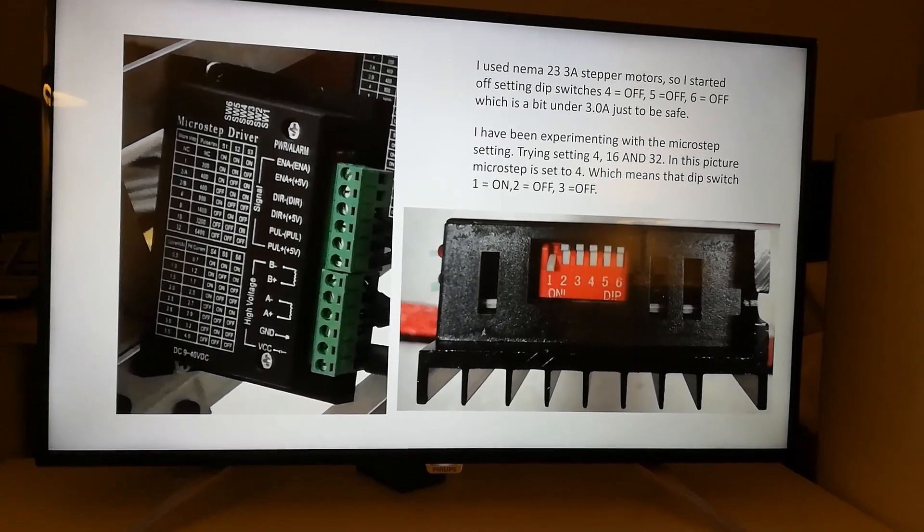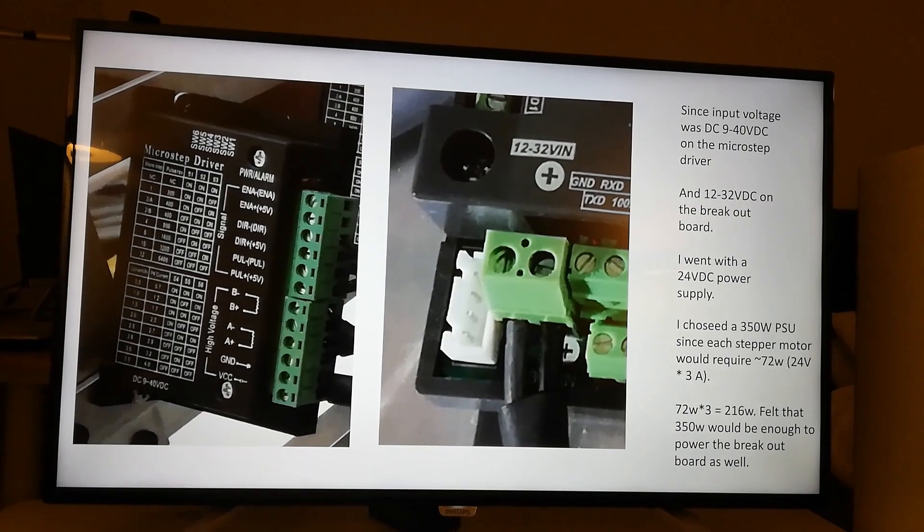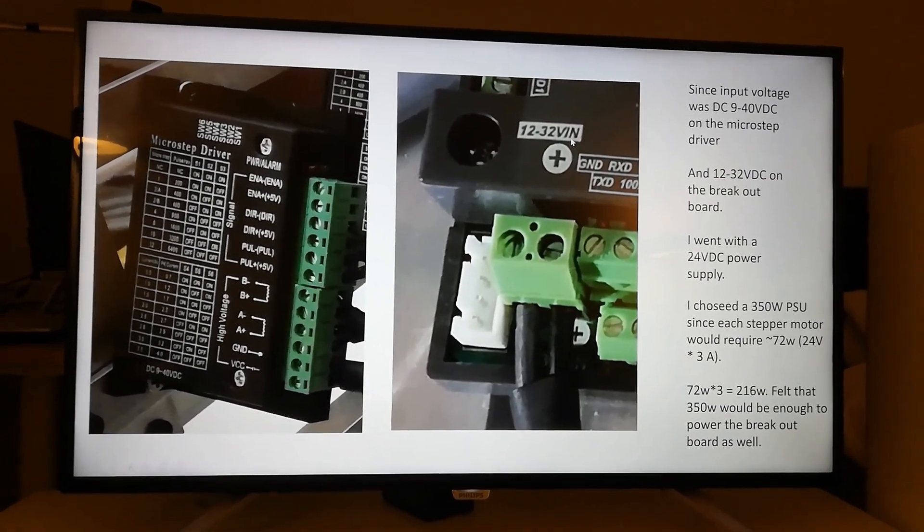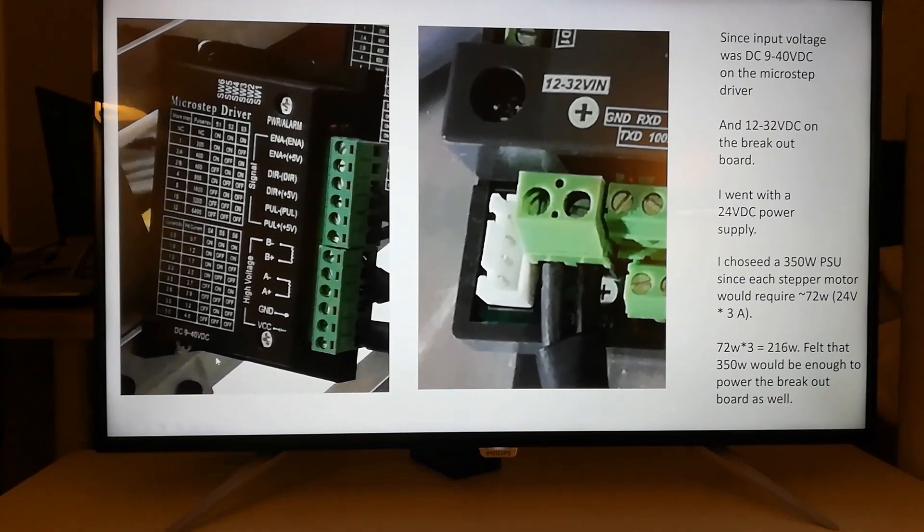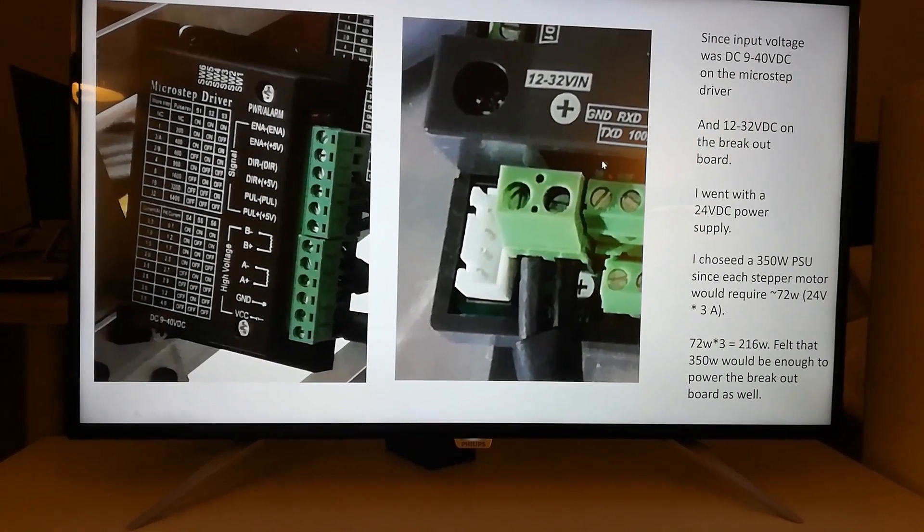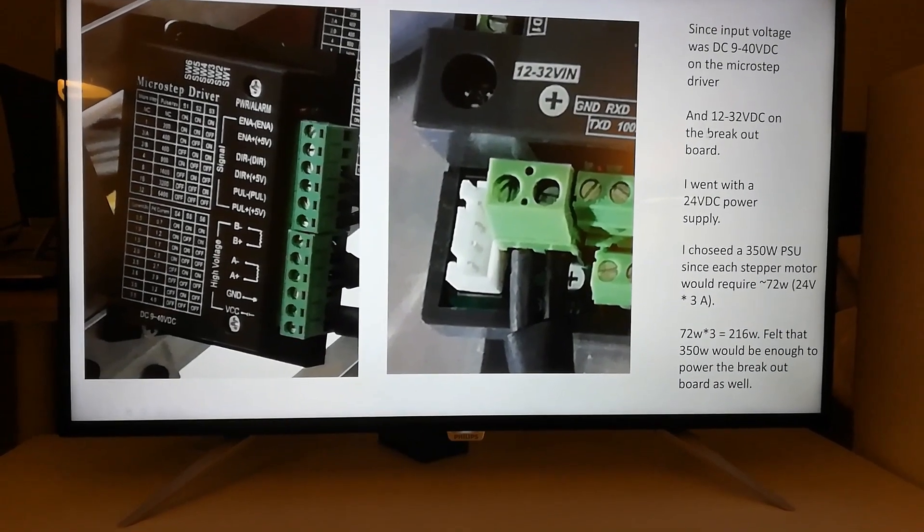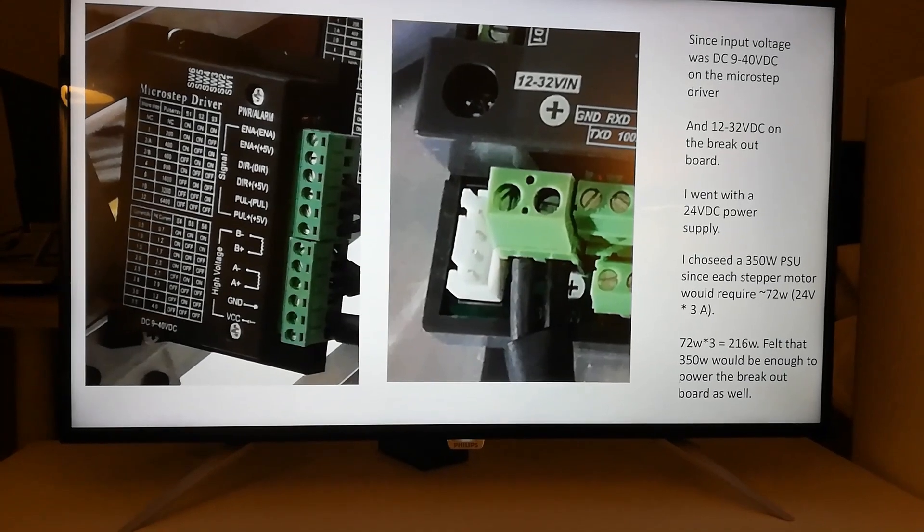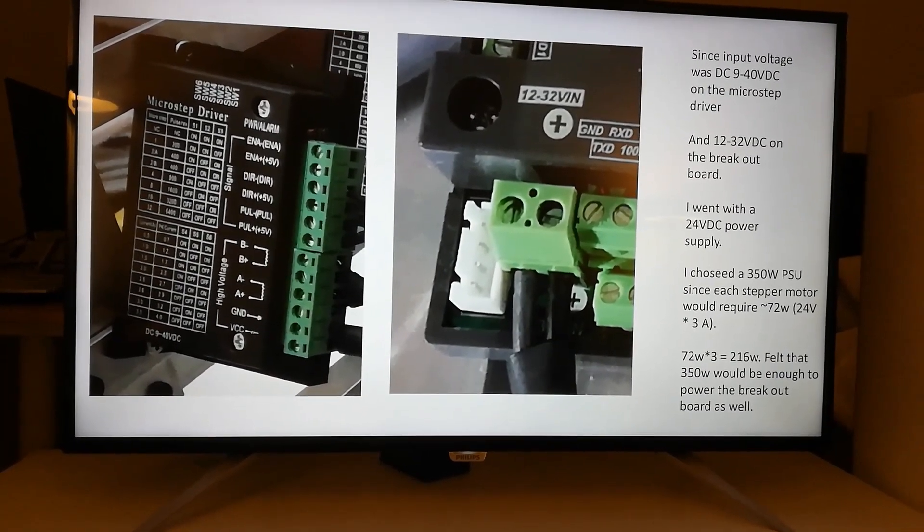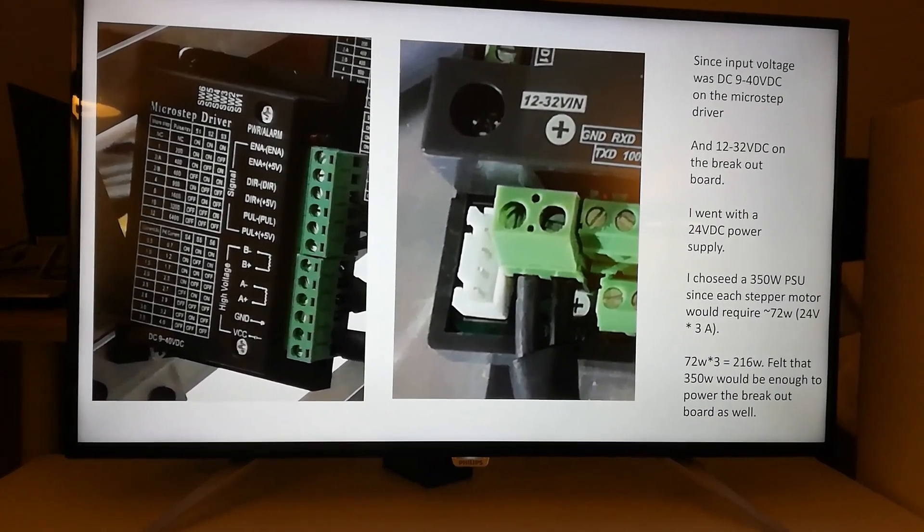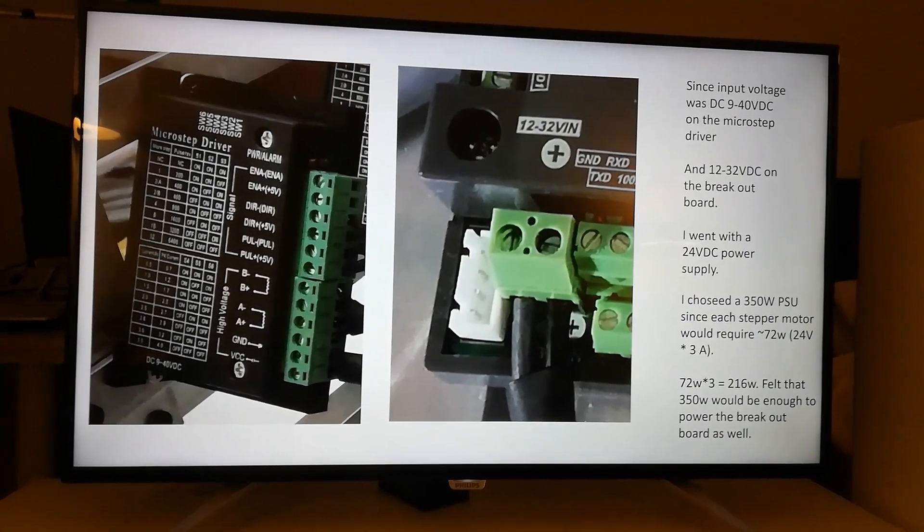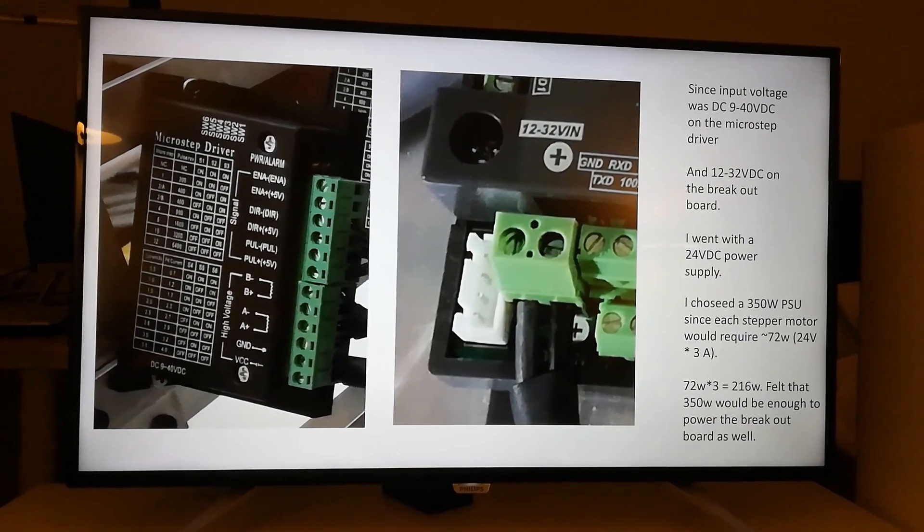On the next slide we have here an input value of 12 to 32 volts on the breakout board and on the MicroStep driver it's between 9 and 40 volts of direct current. So I went with a 24 volt DC power supply since I am a student. That meant I could use same power supply for both the MicroStep drivers and the breakout board. I chose to buy a 350 watt power supply since it would handle both the step motors and the breakout board.